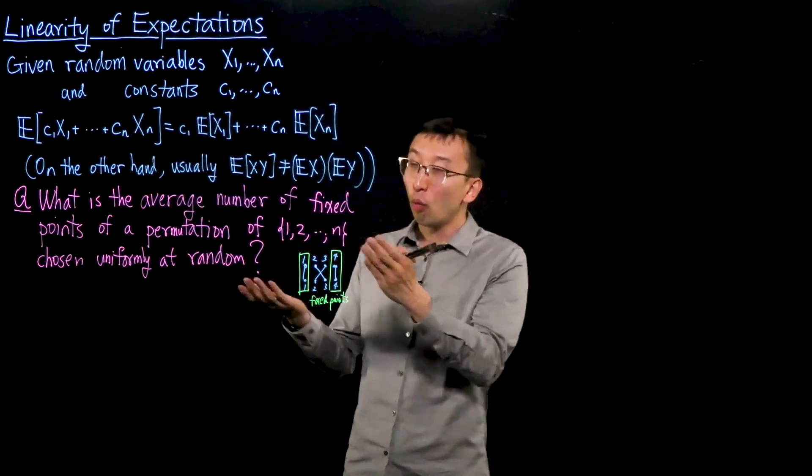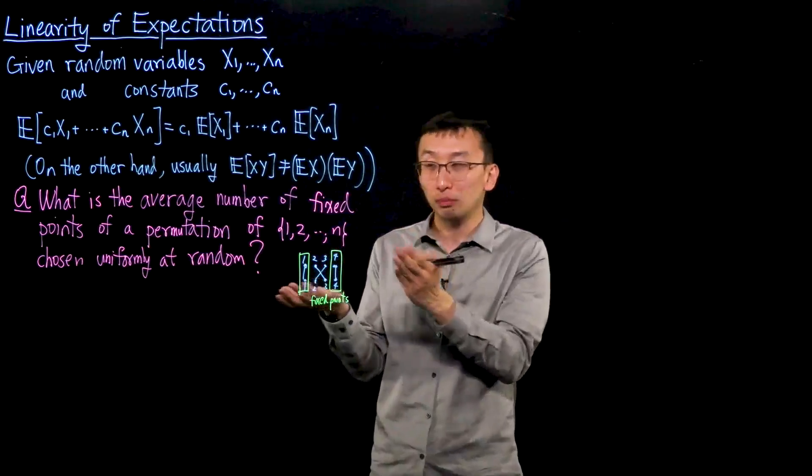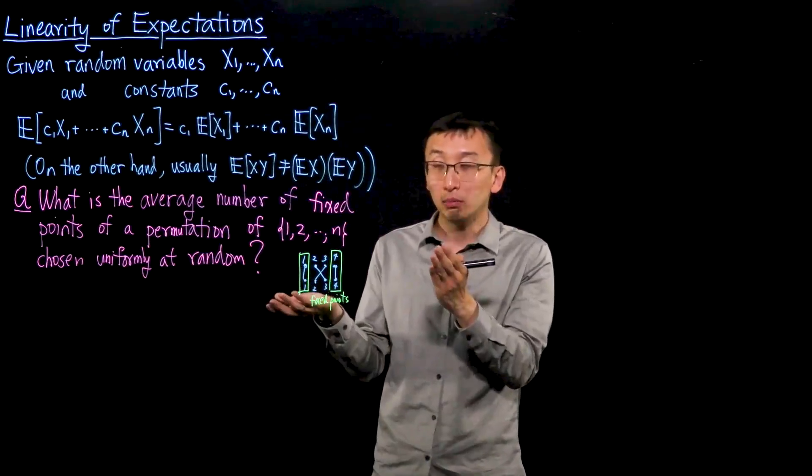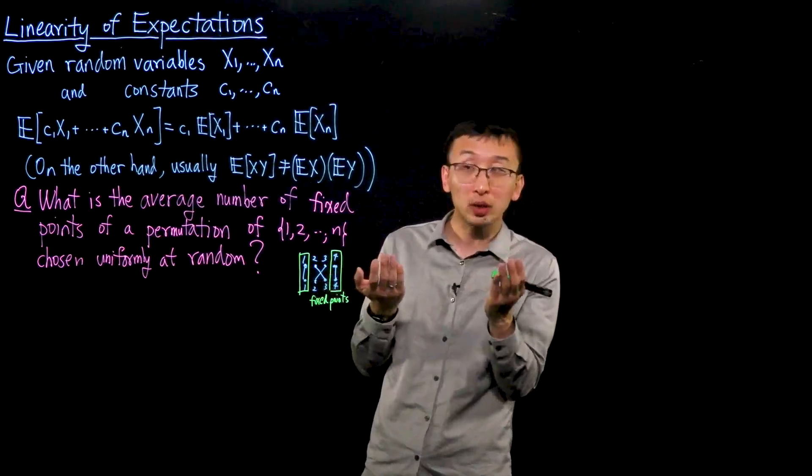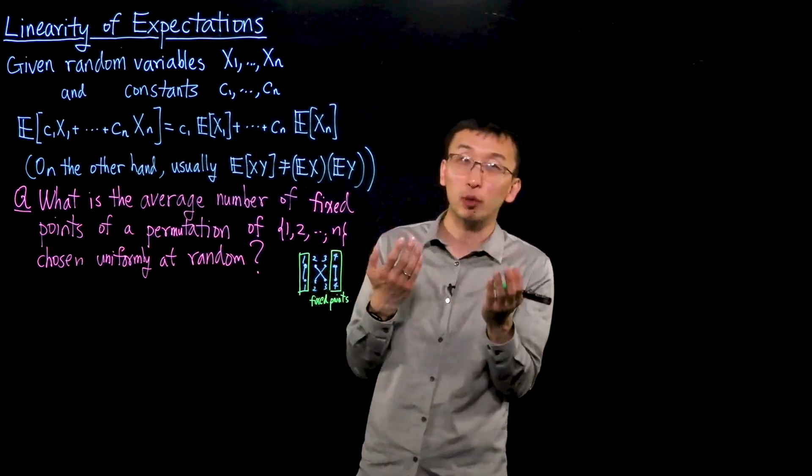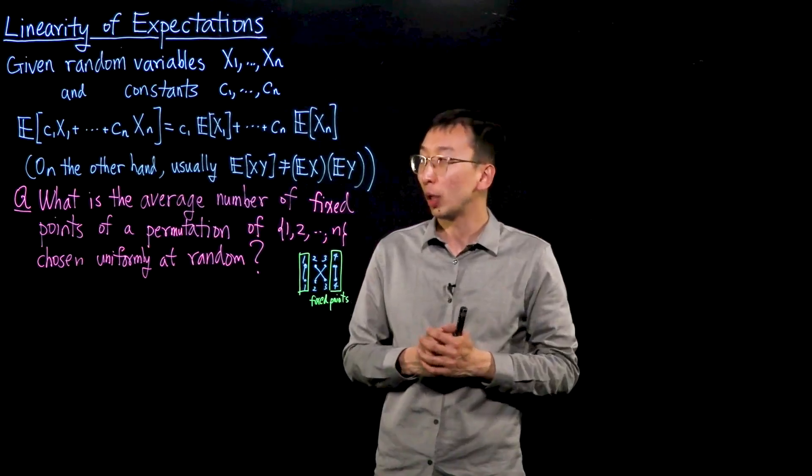Let's answer this question using linearity of expectations. One way to think about the problem is that there are n factorial permutations, and maybe we want to count how many have zero fixed points, one fixed point, two fixed points. But that method can get pretty cumbersome and difficult quite quickly.